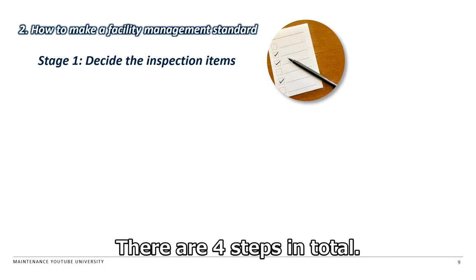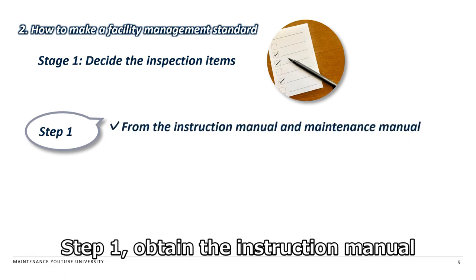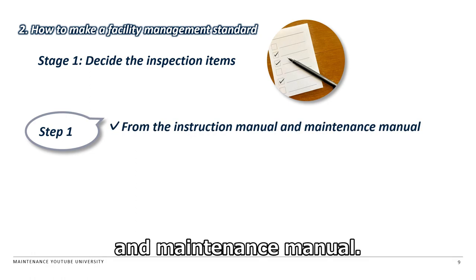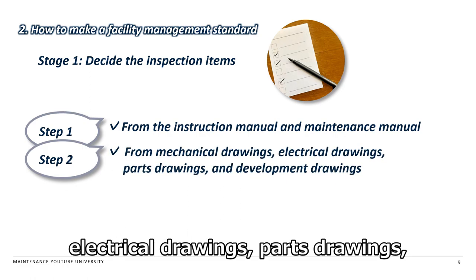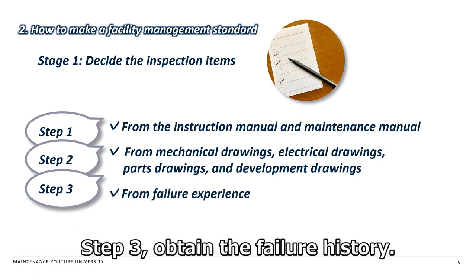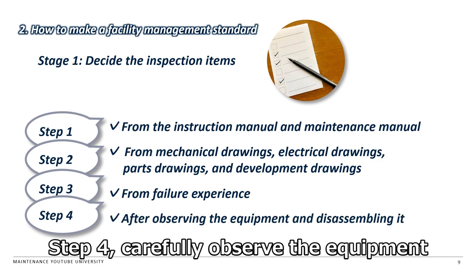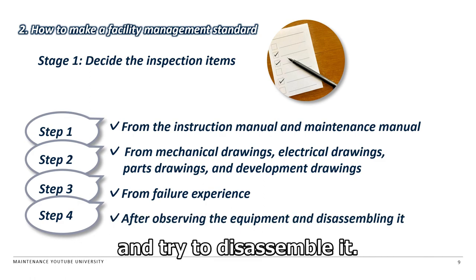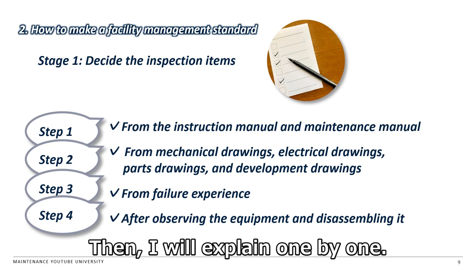There are four steps in total. Step 1: Obtain the instruction manual and maintenance manual. Step 2: Obtain mechanical drawings, electrical drawings, parts drawings, and development drawings. Step 3: Obtain the failure history. Step 4: Carefully observe the equipment and try to disassemble it. I will explain each one by one.